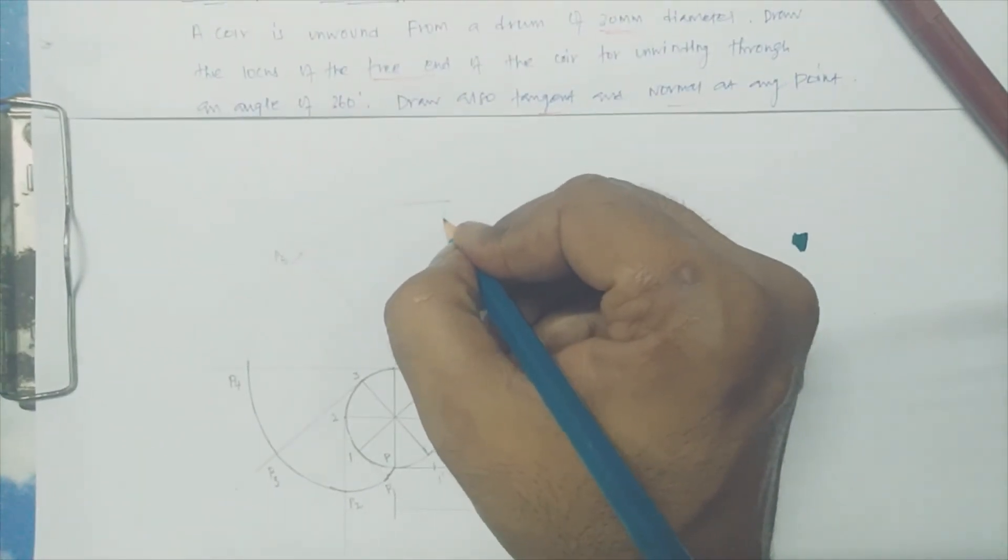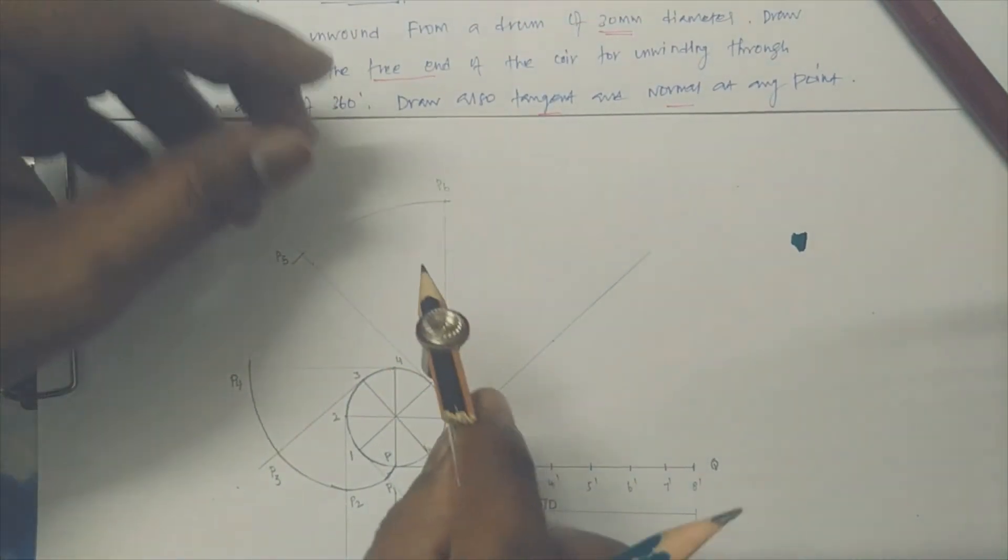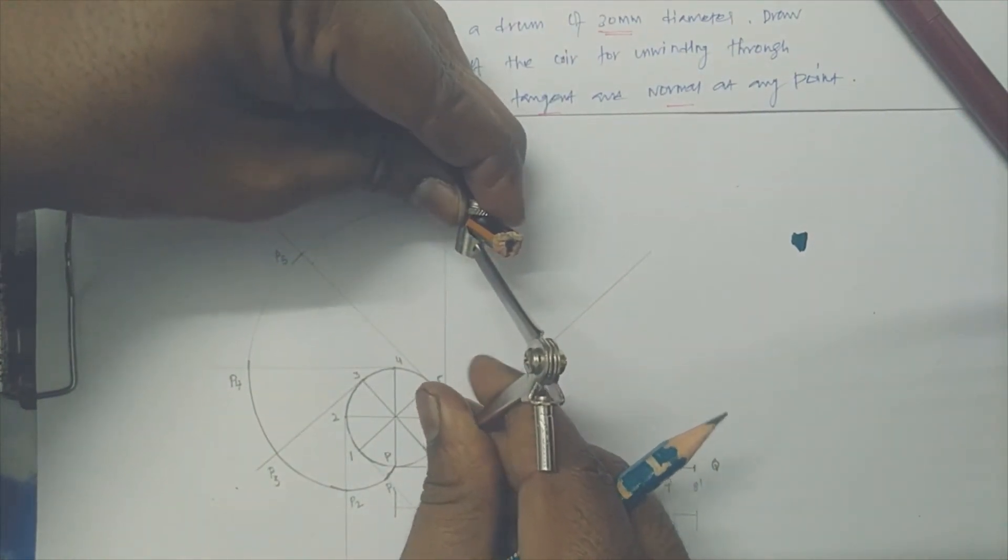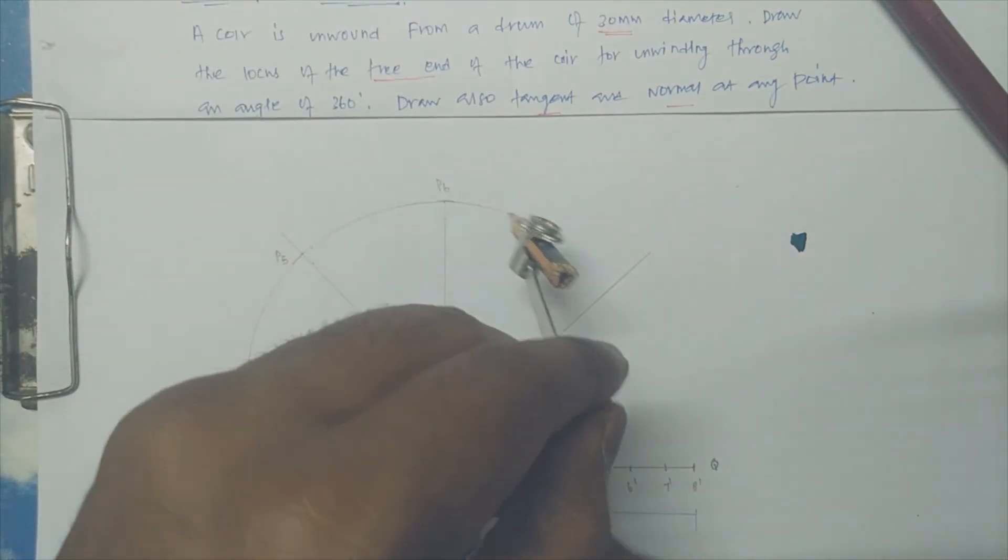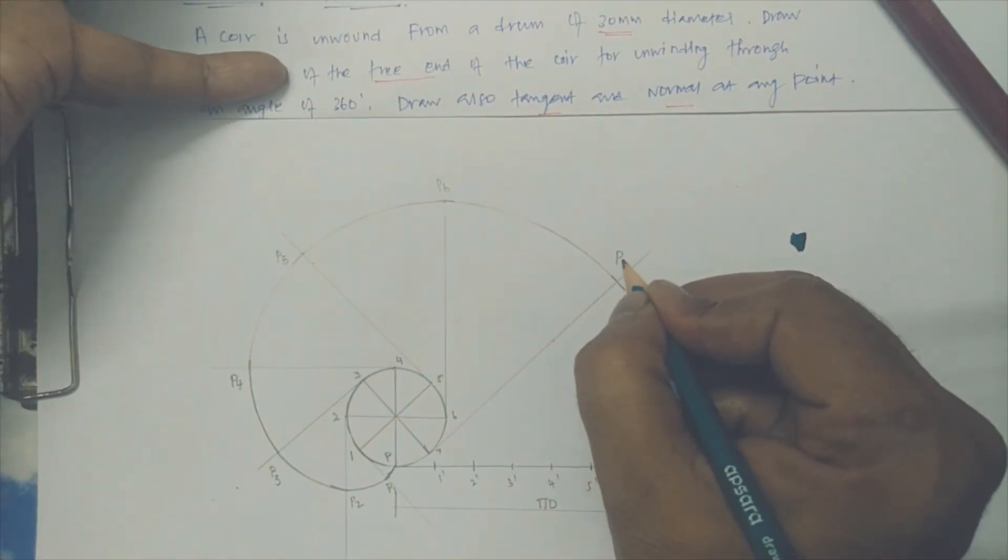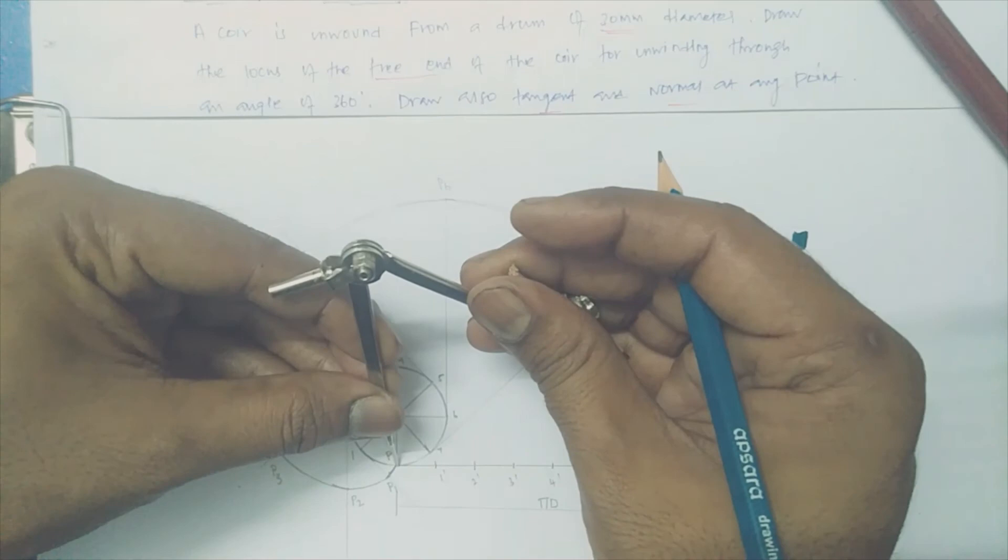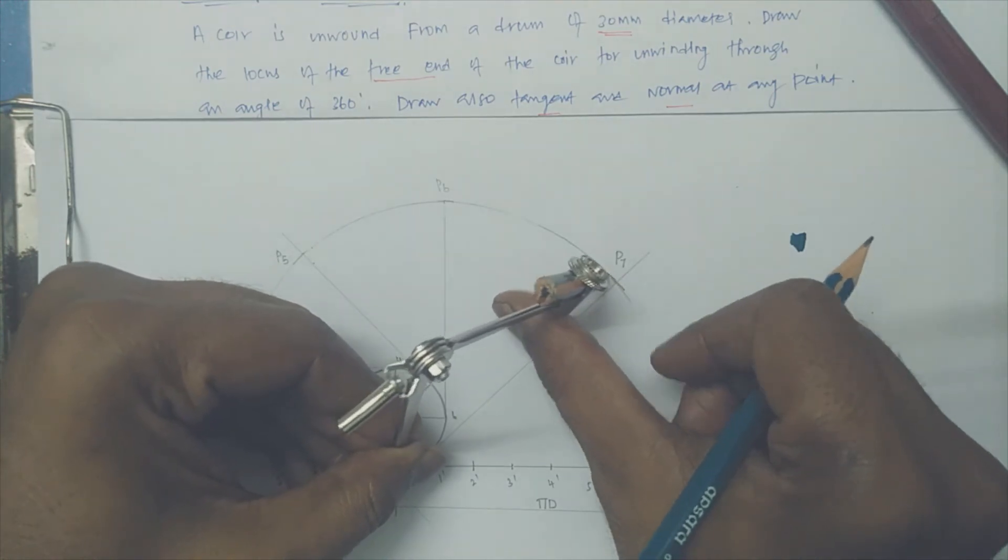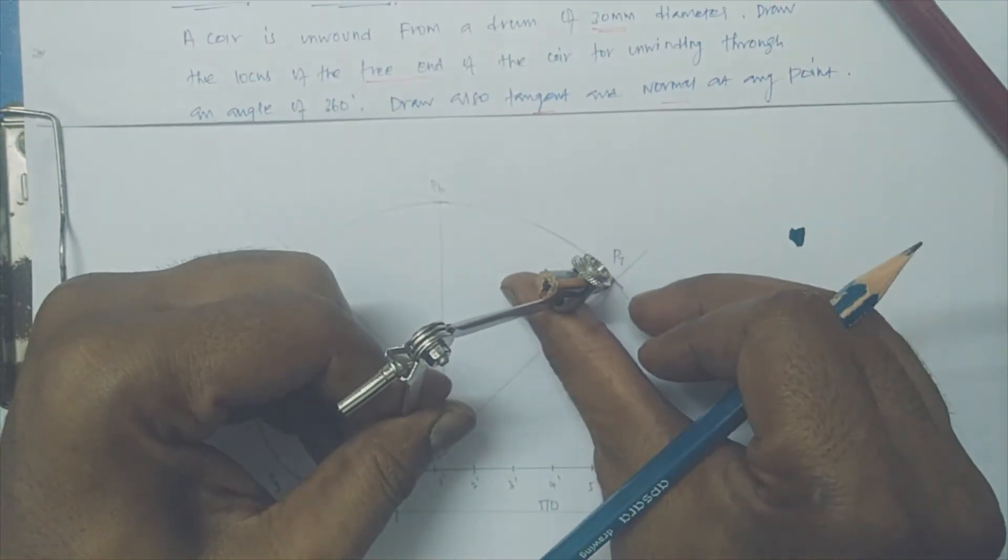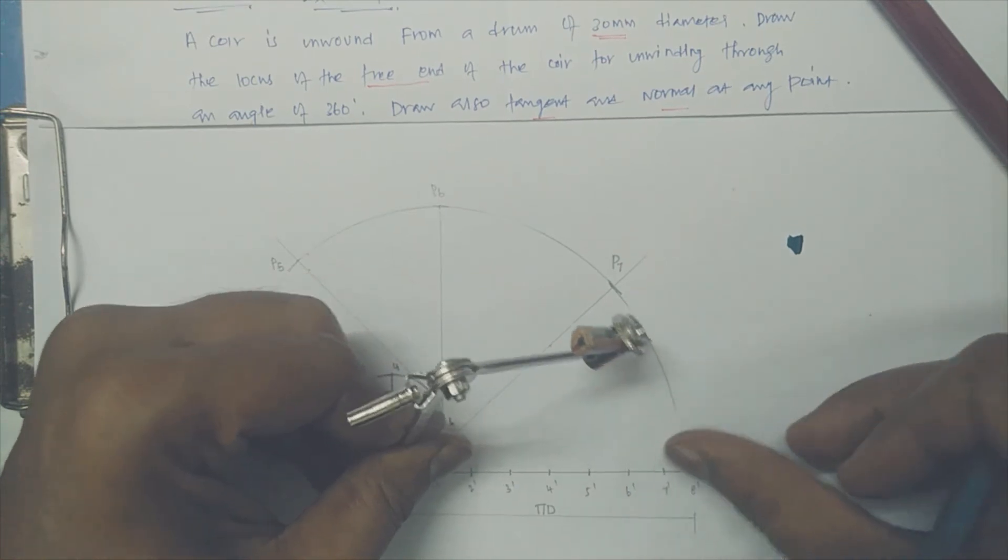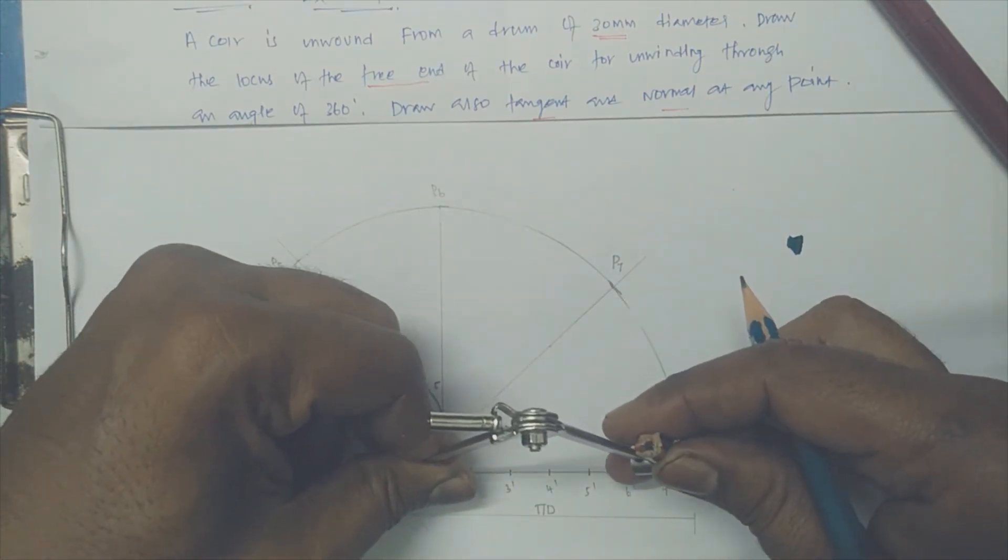Similarly keep 6 as a center, P5 as a radius. This is P6, it's going almost here. This is P6. Now keep 7 as a center, P6 as a radius. This is P7. Now fix 8 as a center or P as a center, P7 as a radius.